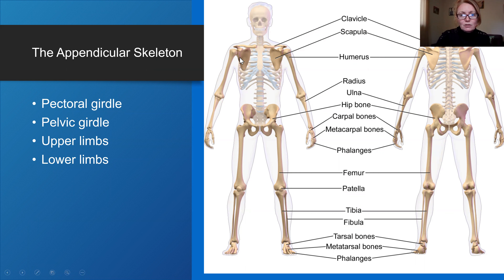The pectoral girdle includes the clavicle and scapula. The pelvic girdle includes the bone we call the hip bone or os coxa, and it's actually made of three bones fused together: ilium, ischium, and pubis.